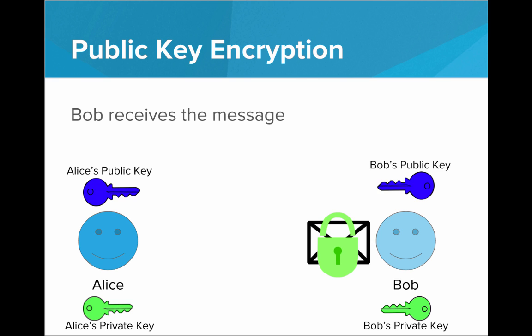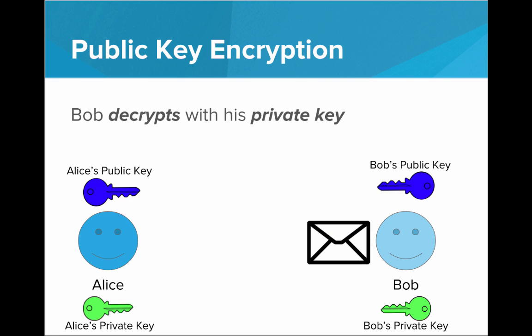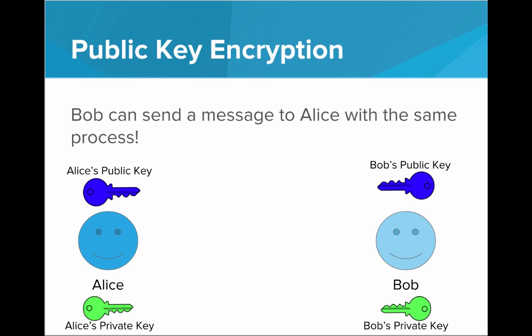Now Bob receives the message. He is able to decrypt it with his private key and then read it. Bob can send a message to Alice with the exact same process — Bob will ask Alice for her public key, encrypt the message with her public key, send it back, and then Alice will decrypt it with her private key. This is the form of encryption used on the internet because it's so much more scalable and reasonable for all computers to be using this system.